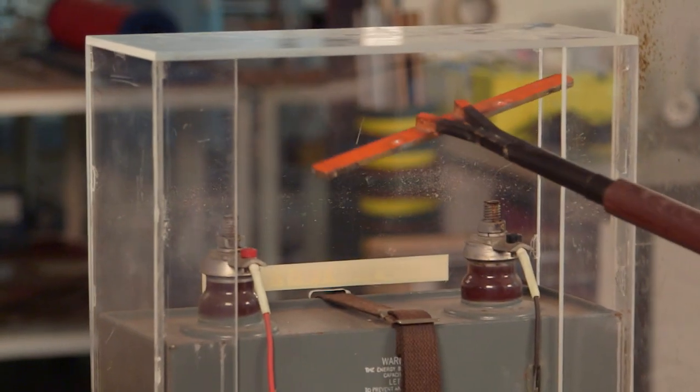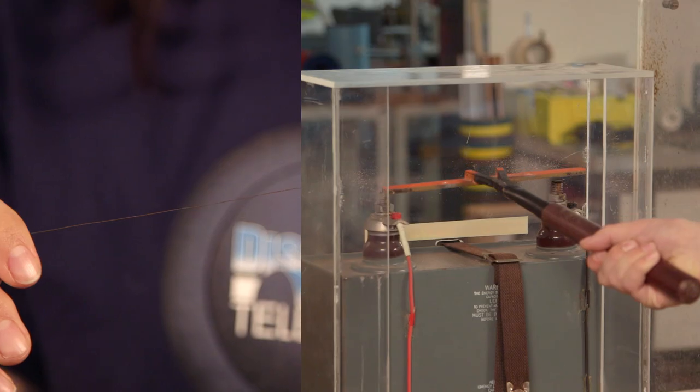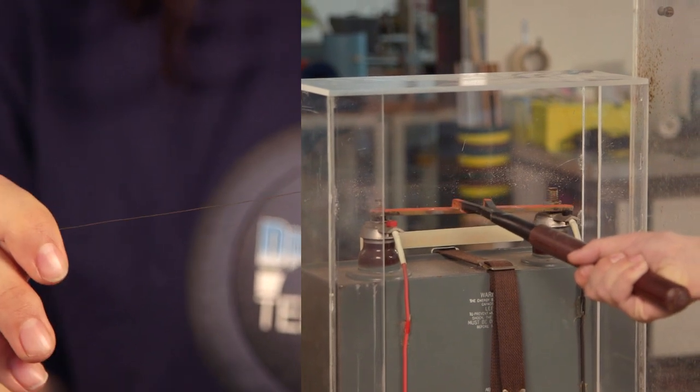Now the thick copper bar has a much bigger cross-sectional area than the thin iron wire and has less resistance. So it dissipated the energy better and didn't explode.